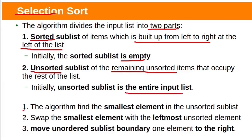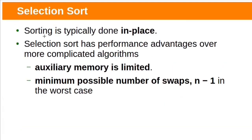Selection sort will perform these three steps. First, the algorithm will find the smallest element in the unsorted sublist. Second, swap the smallest element with the leftmost unsorted element. Third, move the unsorted sublist boundary one element to the right. Like bubble sort, selection sort is also in-place sorting, meaning it doesn't require extra memory except some pointers. Selection sort has performance advantages over other sorting algorithms when auxiliary memory is limited.